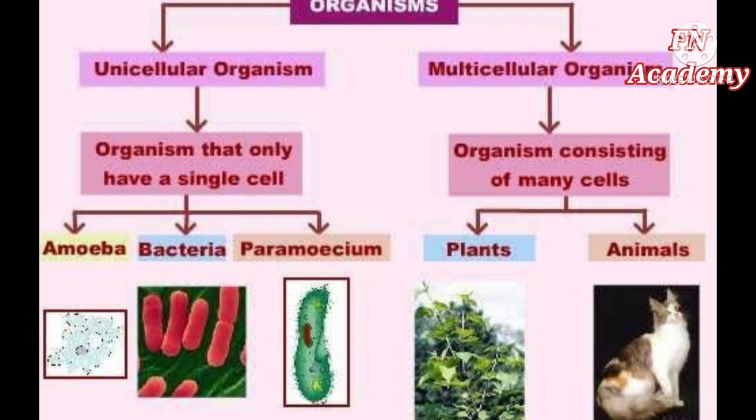Now we will take a look at some features of cells. First, the number of cells. Based on the number of cells, an organism can either be unicellular or multicellular. Uni means one cell — like amoeba, bacteria, and paramecia — they all have a single cell. Multi means many cells — like plants and animals — they all consist of many cells.